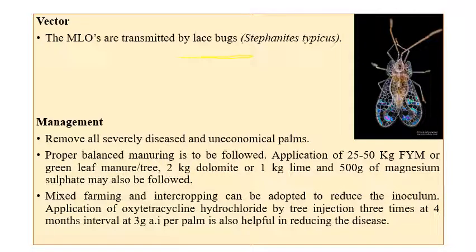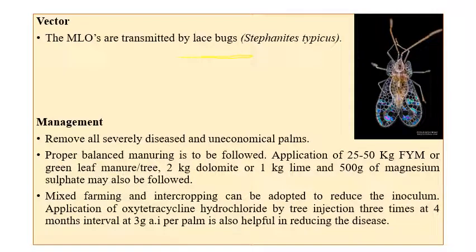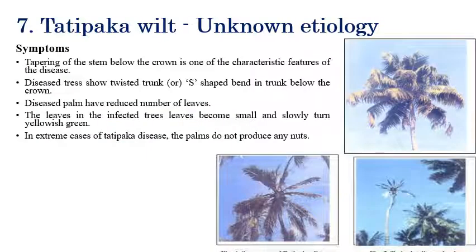Kerala Wilt is transmitted by lace bugs — Stephanitis typicus. For management, removal of severely infected leaves is recommended. Application of 225 kg of farmyard manure or green leaf manure per tree, 2 kg of dolomite or 1 kg of lime, and 500 g of magnesium sulfate per tree can be recommended. Oxytetracycline hydrochloride — an antibiotic effective against phytoplasmal diseases — can be injected at intervals of three to four months.